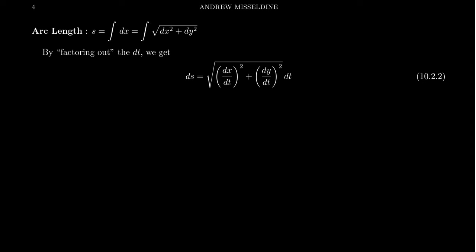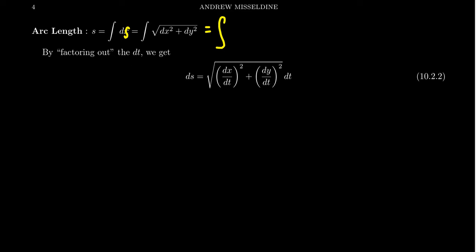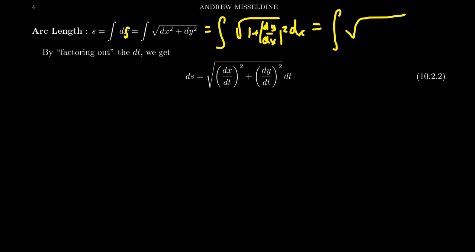We want to do a similar thing for arc length. Remember from arc length we saw before that arc length s is equal to the integral of ds, where ds as we learned from the Pythagorean equation is equal to the square root of dx squared plus dy squared. When we dealt with this for Cartesian functions, we learned that if we factored out dx squared or dy squared we could write this as the square root of 1 plus (dy/dx)² dx, or as the integral of the square root of (dx/dy)² plus 1 dy. By factoring out the differentials dx squared or dy squared, we could integrate with respect to x or with respect to y.